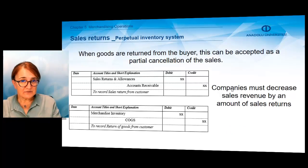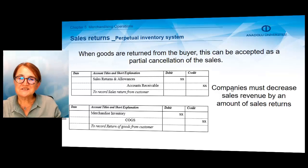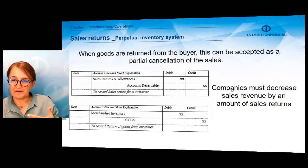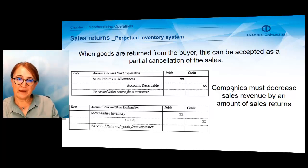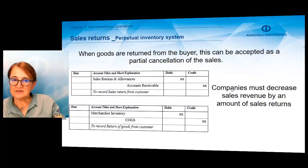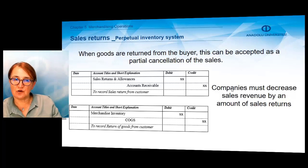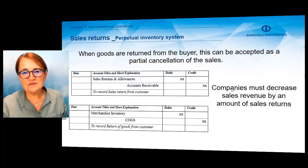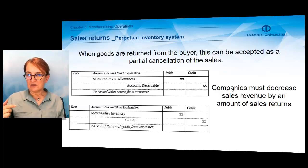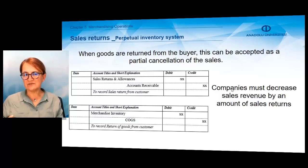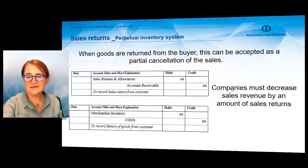Customers can also return some of the purchased items to our company — we call this a sales return. If the customer returns some of the sold items, our earned revenue will decline. To track why revenue is declining, we use a contra revenue account called Sales Returns and Allowances, rather than directly debiting the Sales Revenue account. At the same time, if the customer returns goods, Merchandise Inventory increases and Cost of Goods Sold decreases. You must make two different journal entries for a sales return.